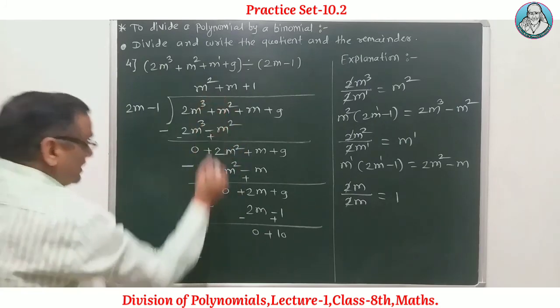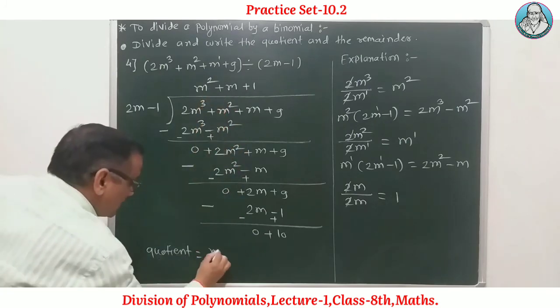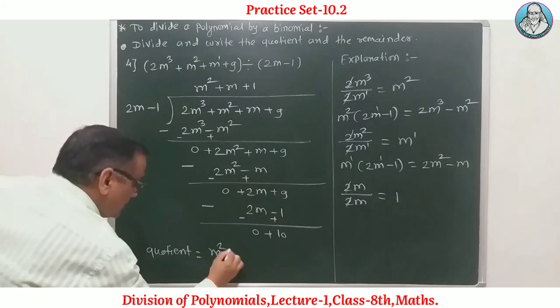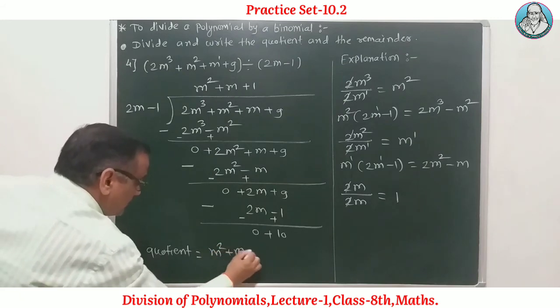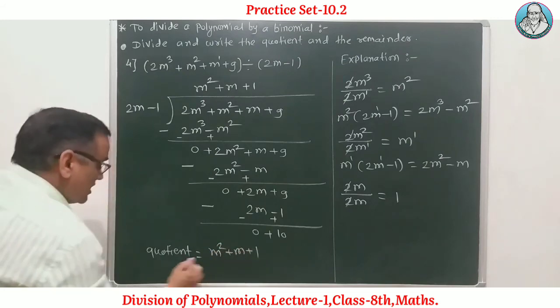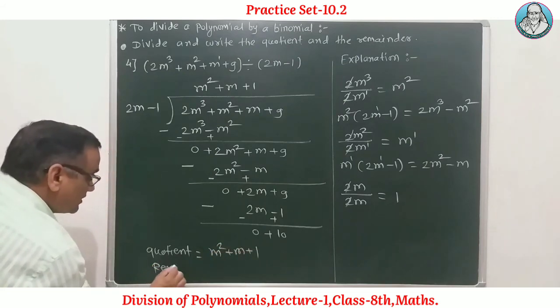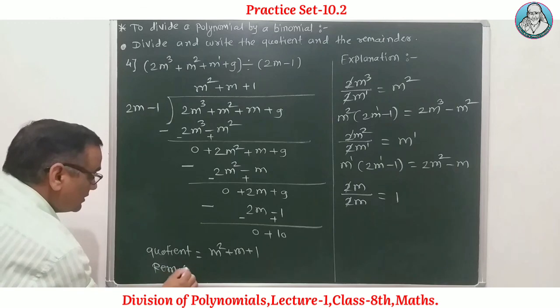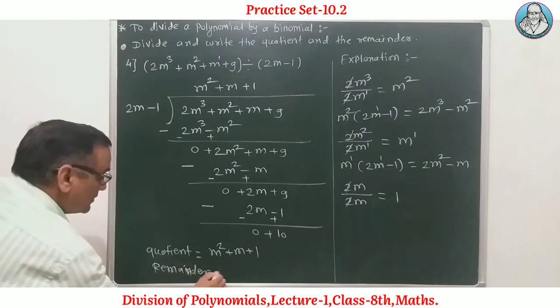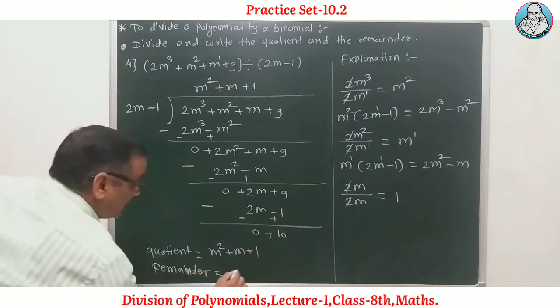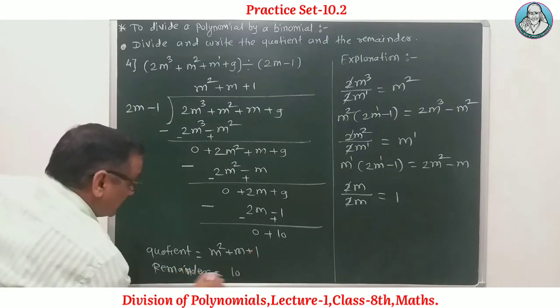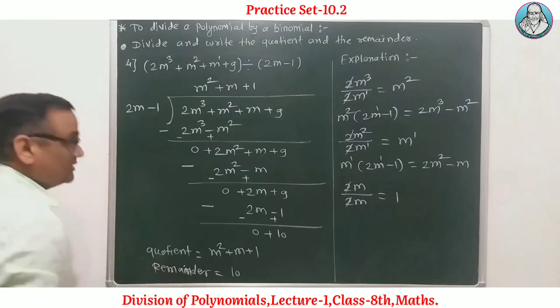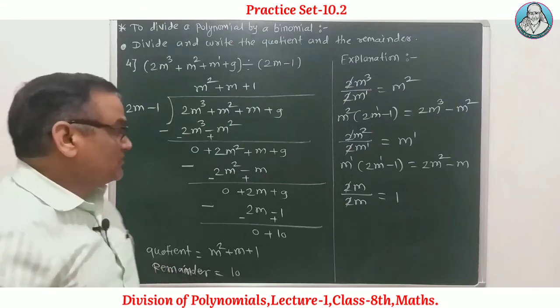Continuing example 4: quotient terms involve 2m, 3m, and 4m, working through each subtraction step to find the remainder. And the remainder is found. Thank you.